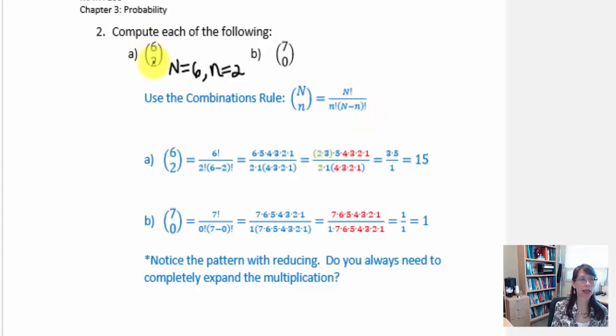So with 6 total elements capital N is replaced with 6 factorial. 2 represents our lower case n so we have 2 factorial multiplied by 6 minus 2 factorial.